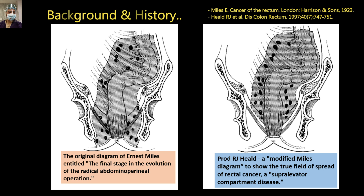These are two historical diagrams. The first is the original diagram by Sir Ernest Miles, who gave the concept of abdominal perineal excision, entitled 'Final stage in the evolution of radical abdominal perineal excision.' Sir R.J. Heald, who gave the concept of total mesorectal excision (TME), modified this, stating that the true field of spread of rectal cancer is the supra-levator compartment. Viewers can go through these papers for a better understanding.